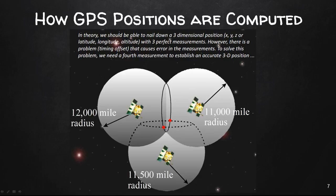However, there's a problem which is called timing offset that causes error in the measurements. To solve this problem, we're going to need a fourth measurement to establish an accurate 3D position. That's why we're going to need four satellites at all times, at minimum, to calculate a position.